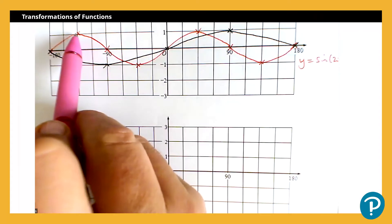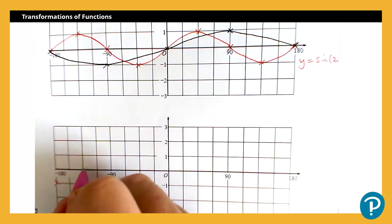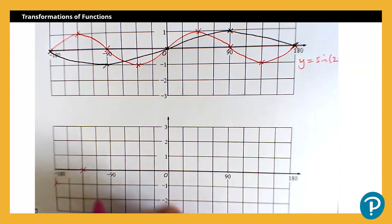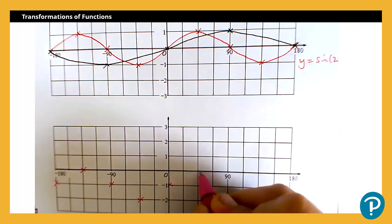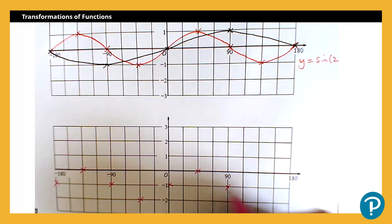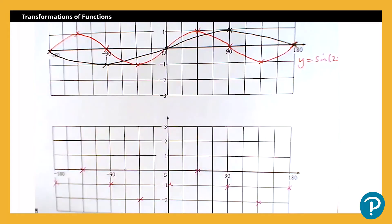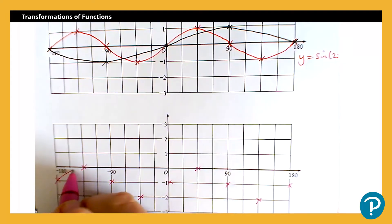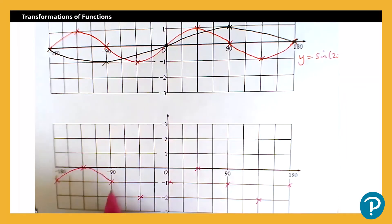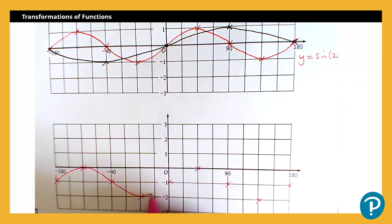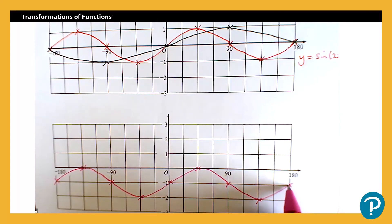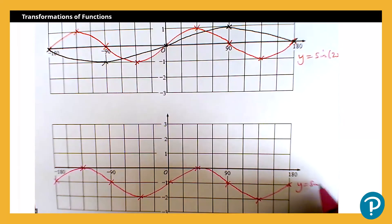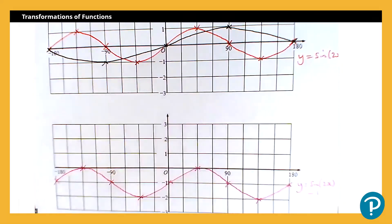The point at negative 135, 1 will become negative 135, 0, and so on. So I'm just going to mark in those key coordinates for myself. And there. And then I'm going to join them up smoothly as I can. And I've got y equals sine 2x minus 1.